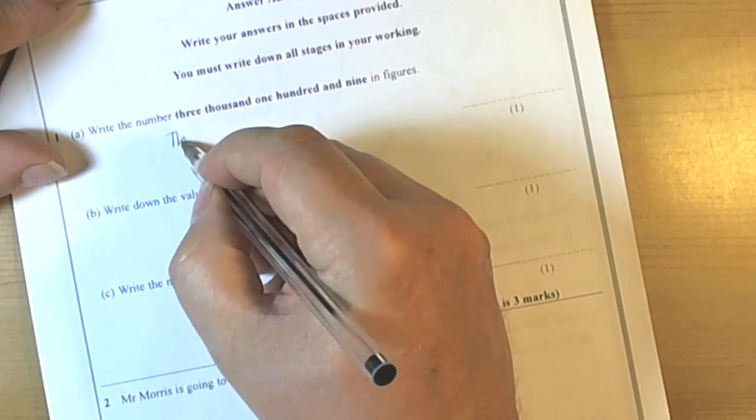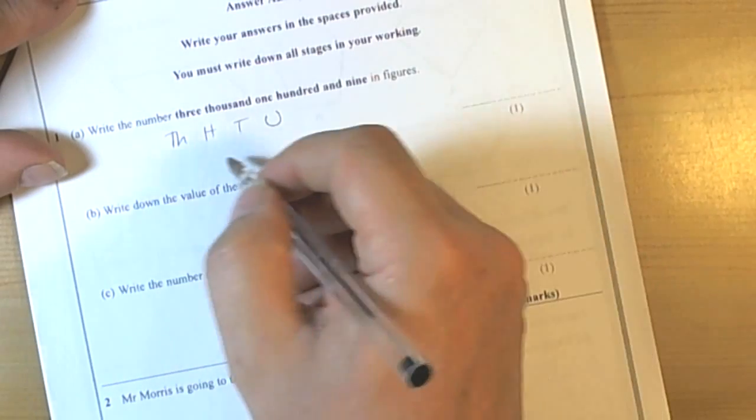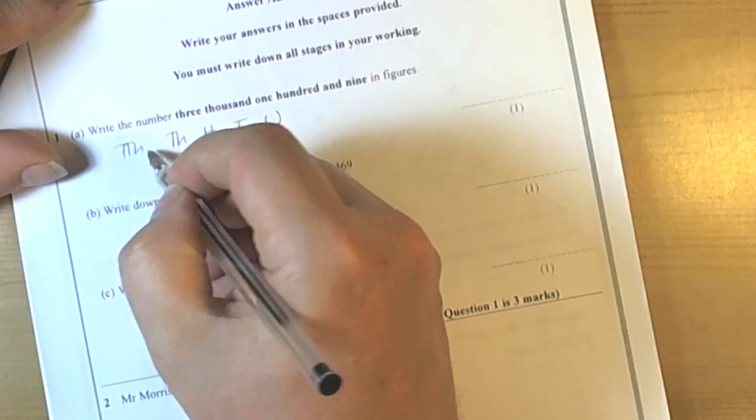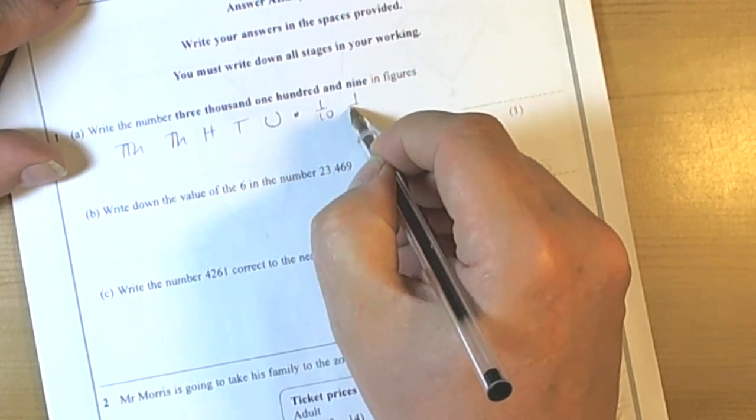So place value talks about thousands, hundreds, tens, units, tens of thousands and so forth. Decimal points, tenths, hundredths.